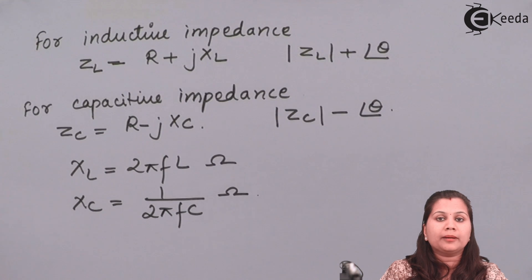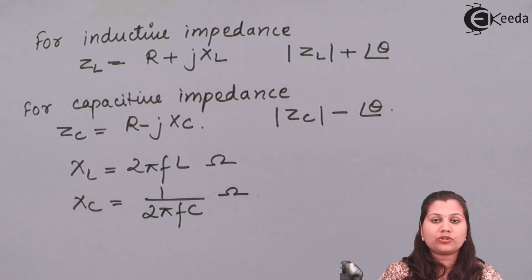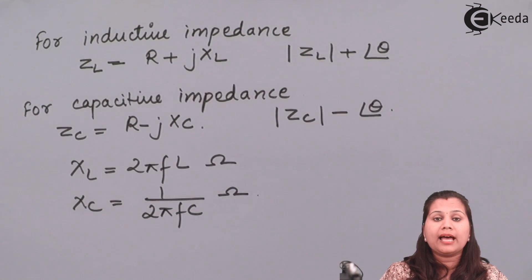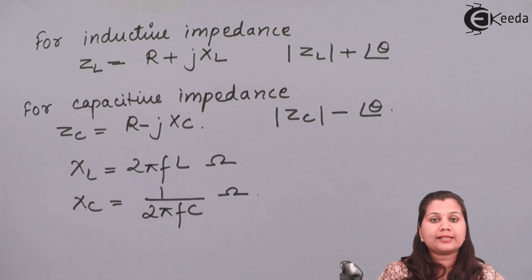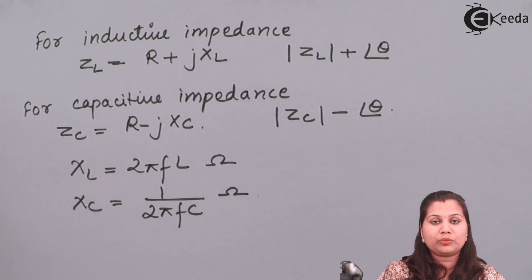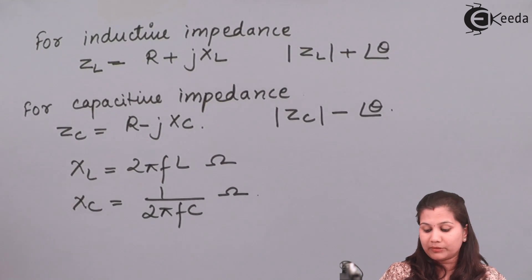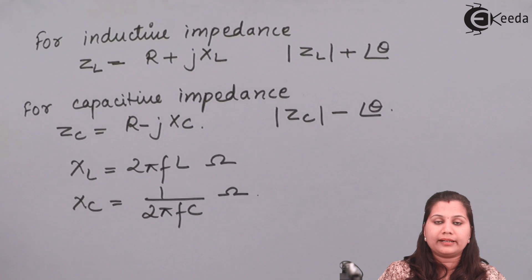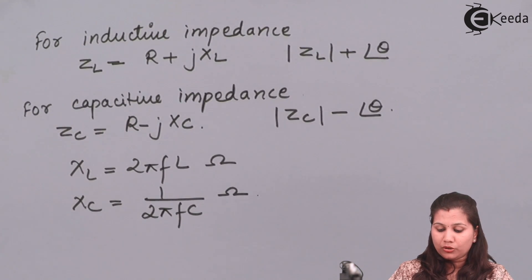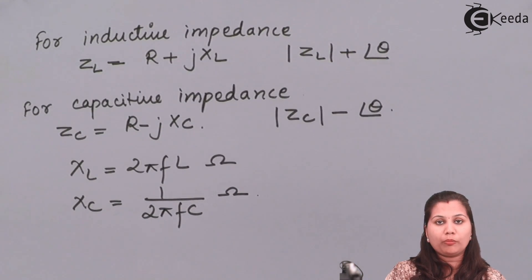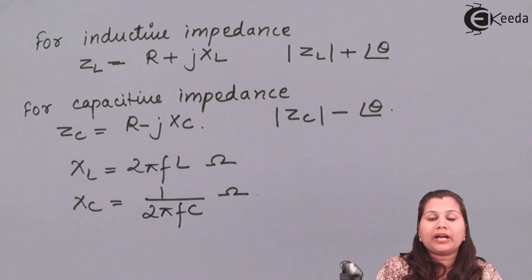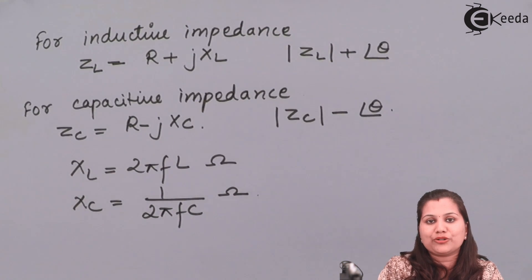In summary, we derived the general balance equation for alternating current bridges. The key result is Z1·Z4 = Z2·Z3 — the product of impedances of opposite arms is equal. We also obtained the polar form conditions for magnitude and phase angle, and the admittance form Y1·Y4 = Y2·Y3. Both polar and coordinate forms of impedance representation were considered.